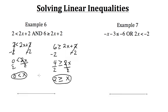Now we combine them into one solution. X is less than or equal to 2, but also greater than 0. Writing them together from least to greatest: 0 is less than x, and x is less than or equal to 2.